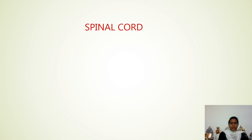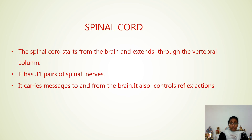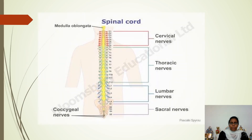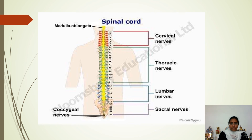The last topic in the nervous system is the spinal cord. The spinal cord starts from the brain and extends through the vertebral column — the backbone — which protects it. It has 31 pairs of spinal nerves and carries messages to and from the brain. The spinal cord is also very important in controlling reflex actions. The spinal nerves include cervical nerves, thoracic nerves, lumbar nerves, sacral nerves, and coccygeal nerves.